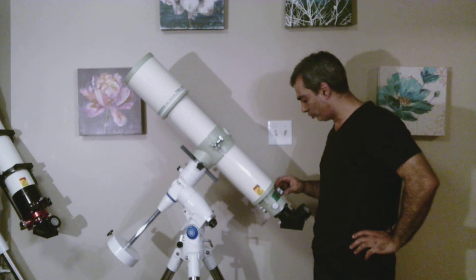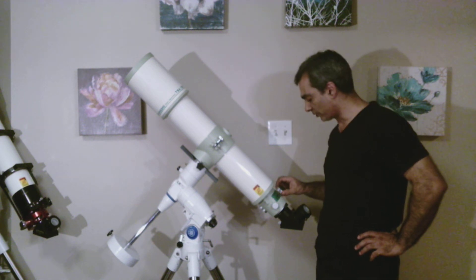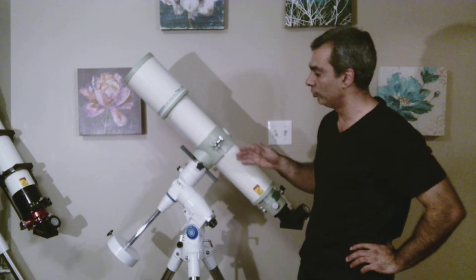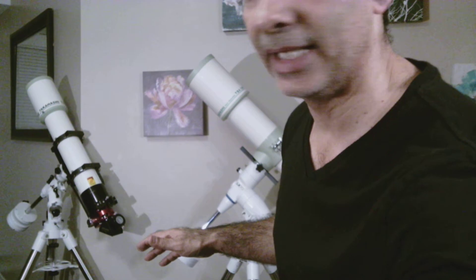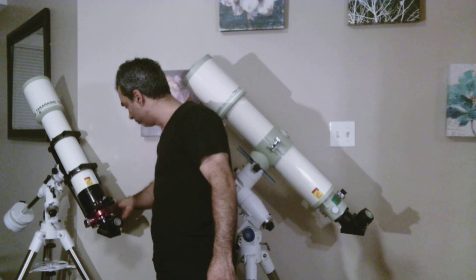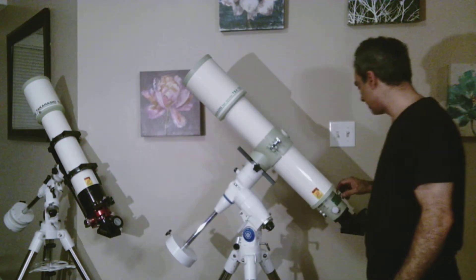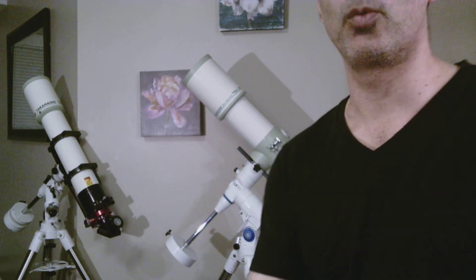This one does come with a dual-speed 10 to 1 reduction focuser. So, unlike the 102, I actually upgraded the focuser in that other video. This focuser, made by Moonlight, was $713. Now, this one already comes with a dual-speed focuser, so hopefully that's good enough for what I need.